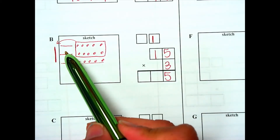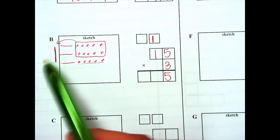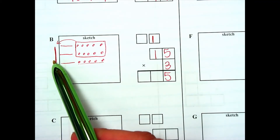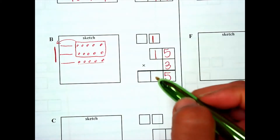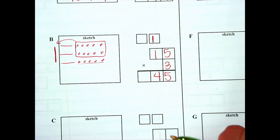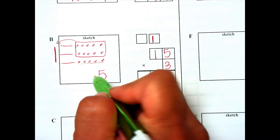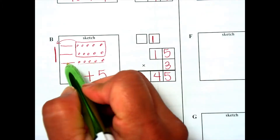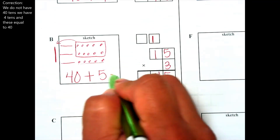Now let's see how many tens do we have in each row. We have one ten in each row, plus the one that we regrouped. So how many tens do we have in all? 1, 2, 3, 4 — four tens in all. Our answer is 45. We had five ones and 10, 20, 30, 40 — forty from the tens. 40 plus 5 equals 45.